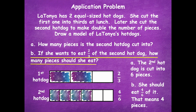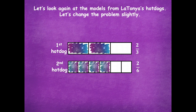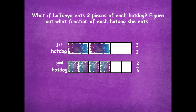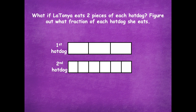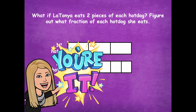Now we're going to use the work from our application problem for the next part. Let's look again at the models from LaTonya's hot dogs and change the problem slightly. What if LaTonya eats two pieces of each hot dog — figure out what fraction of each hot dog she eats? You need to erase your shading because we're just going to change this. We just need to know the parts it's already divided into. Pause the video, shade in those two pieces for each hot dog, figure out what fraction of each hot dog she eats, label that, and then click play when you're ready.